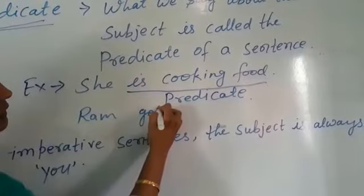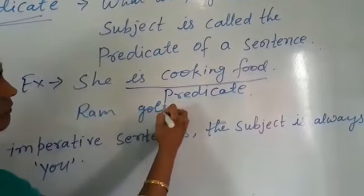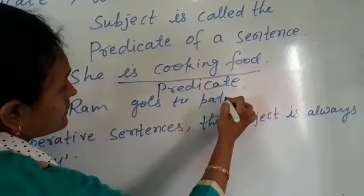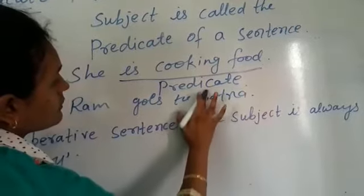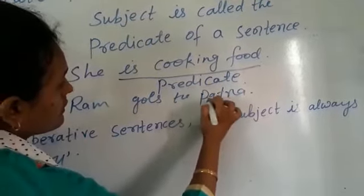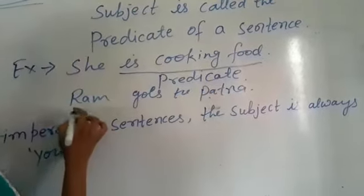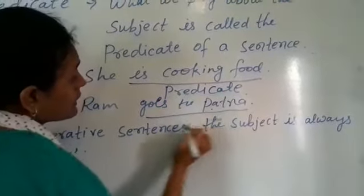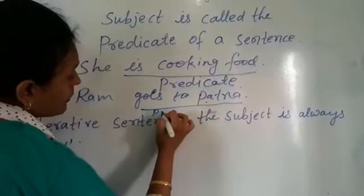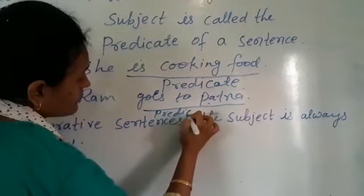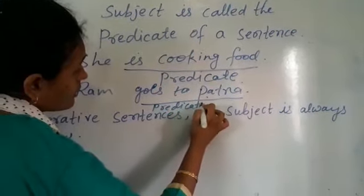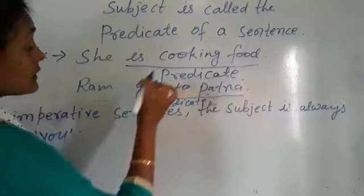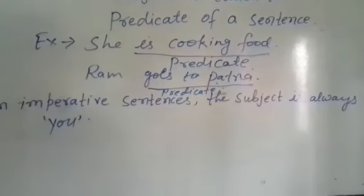Another example: 'Ram goes to Patna.' Here, 'Ram' is the subject, and 'goes to Patna' is the predicate. The words describing the action done by the subject are called the predicate.